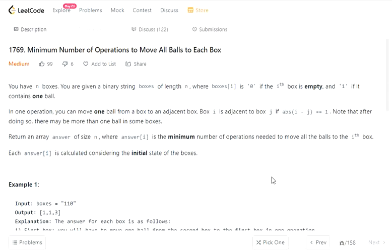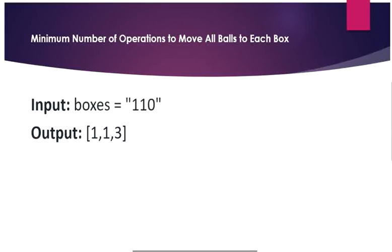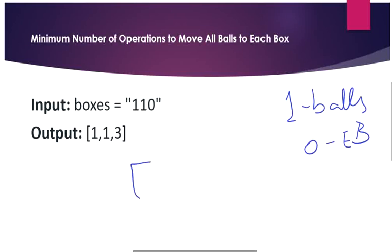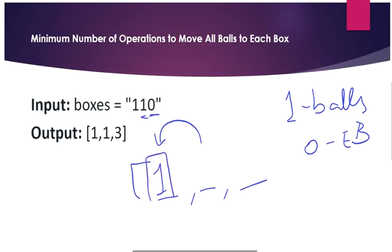Let's understand this with an example. Here is a given string boxes where 1s are considered as balls and 0s as empty boxes. Now we have to move all the balls to the 1st position. The 1st position already has 1 ball so it takes 0 effort. At the 2nd position we have 1 ball — to move it to the 1st position takes 1 step. At the 3rd position there are no balls, so we have moved all the balls to the 1st position in 1 step total.